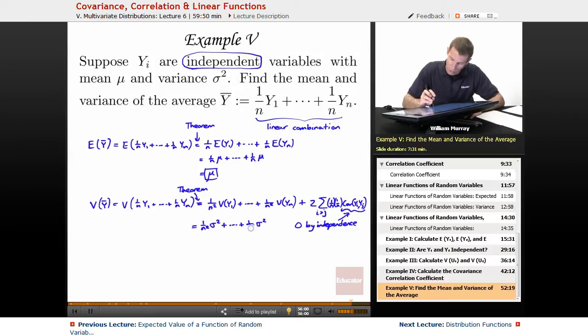Now, let me write that a little more clearly. That's 1 over n squared in the denominator there. And so what I have is n terms here of 1 over n squared times sigma squared. And so that simplifies down to sigma squared over n.